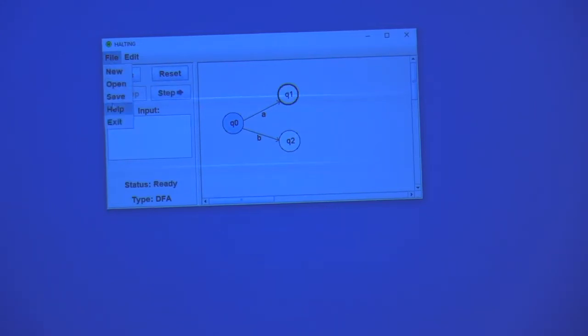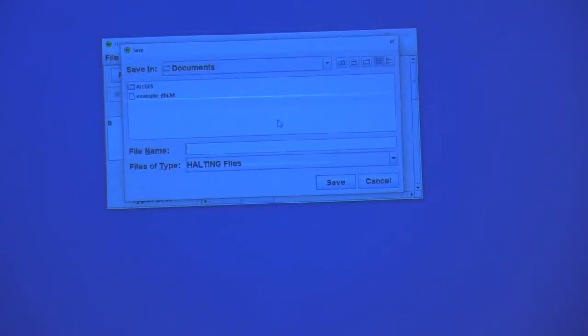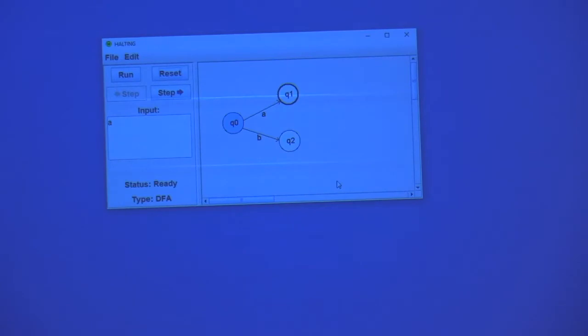So I might like to use this machine again later, so I'm going to save it. I'm going to file save, put it in documents. I'll just call it AB. And that's been saved. The file's right here. It's been saved.